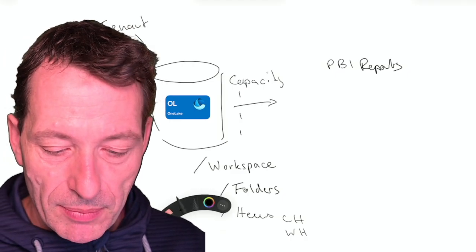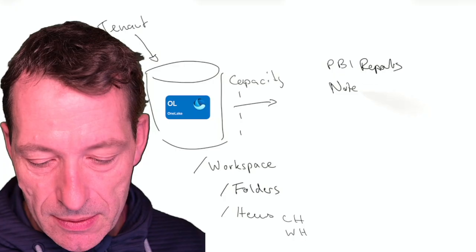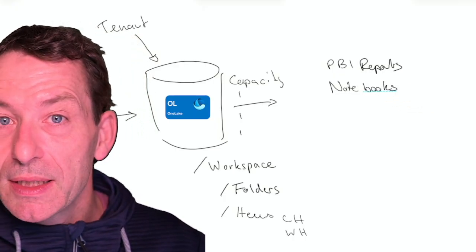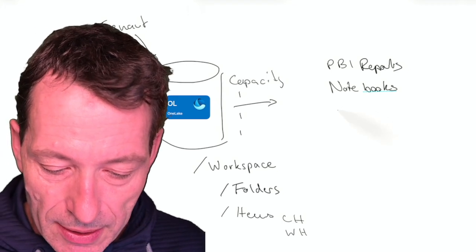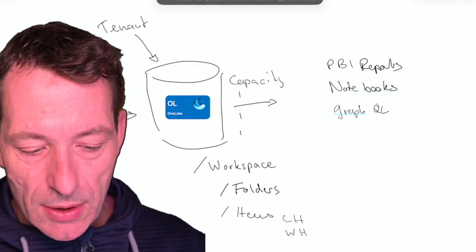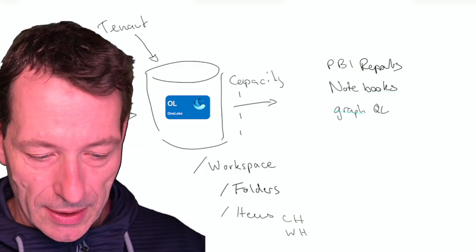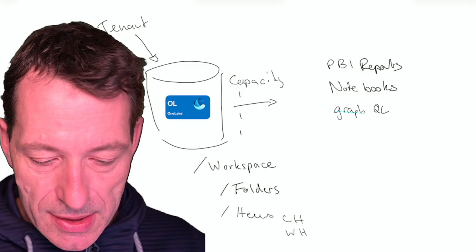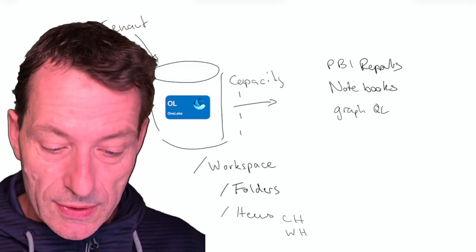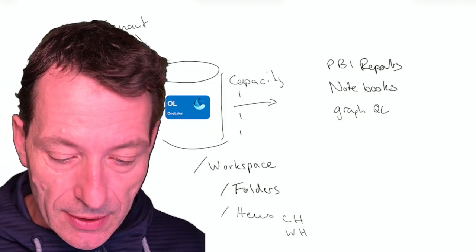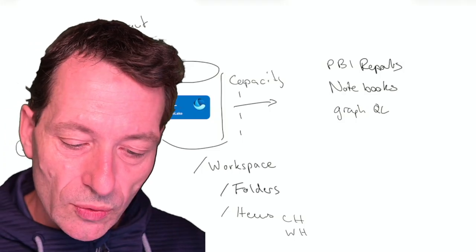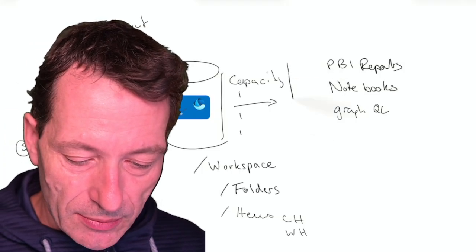So who can consume data from OneLake? Power BI reports, notebooks are very famous, but basically everything else. Even if you have something like GraphQL as an API, it also consumes the data out of your OneLake. So as you can see, there are different interfaces. Not all tools use the same interface to OneLake. OneLake stores the data, but you have different engines that provide this data to different consumers. So the engines are in between here.